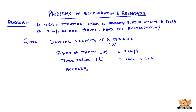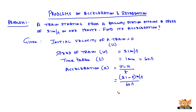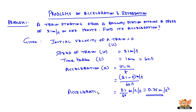So the acceleration A is given as v minus u by t — final velocity minus initial velocity by time taken. In this case, it is 21 minus 0 meters per second divided by 60 seconds, which is 21 by 60 meters per second per second, which is 0.35 meters per second square. So the acceleration is 0.35 meters per second square.